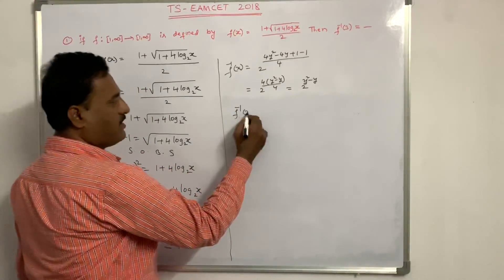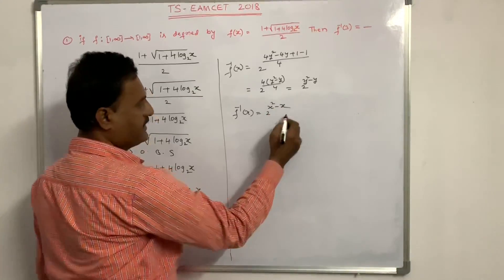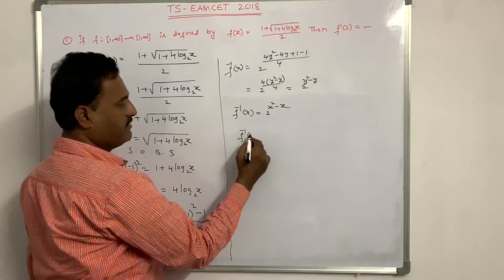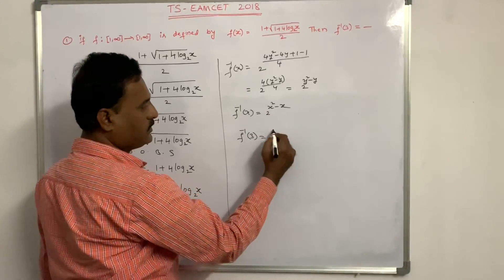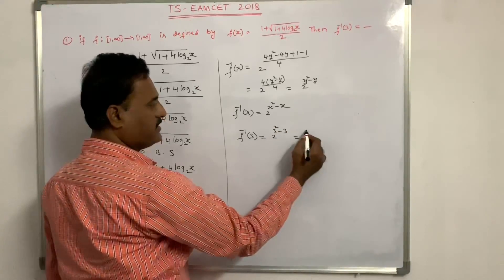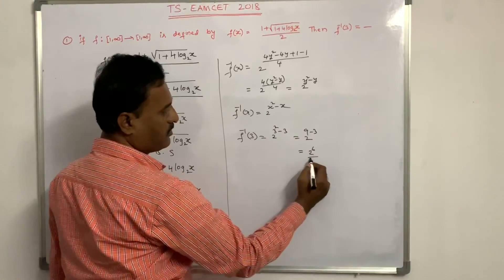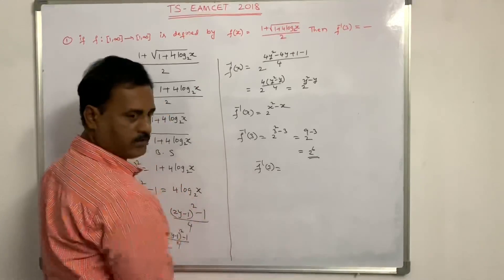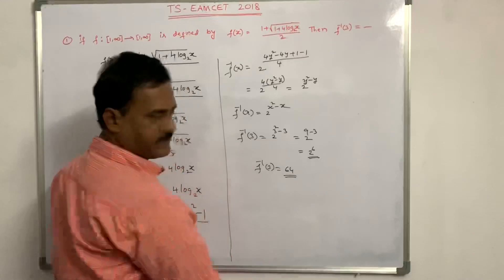Therefore f inverse of x equals 2 to the power of x squared minus x. To find f inverse of 3, substitute x equals 3: 2 to the power of 3 squared minus 3, that is 2 to the power of 9 minus 3, which is 2 to the power of 6. Therefore f inverse of 3 equals 2 to the power of 6, which is 64. That is the answer.